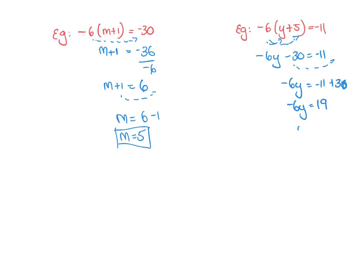And then we've got y equals 19 divided by negative 6. So, we can't simplify this fraction anymore because there's no number that goes into 19 and 6. So we'll leave it as that. And that's an exact answer. So that's good.